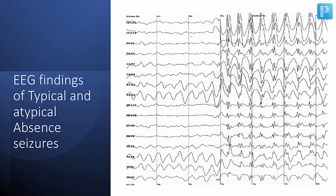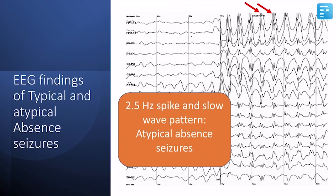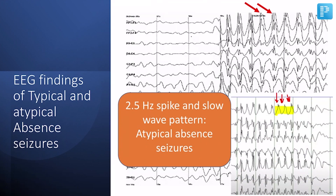When it comes to the EEG of these patients, the traditional finding is a 3 per second spike and slow wave pattern. But if you look at the EEG flashing on the screen, you will notice only two or approximately two and a half waves every second. This feature of 2.5 Hz spike and slow wave pattern is seen with atypical absence seizures. In contrast, the subsequent EEG shown is the classical 3 per second spike and slow wave pattern, seen in the typical variety of absence seizures.